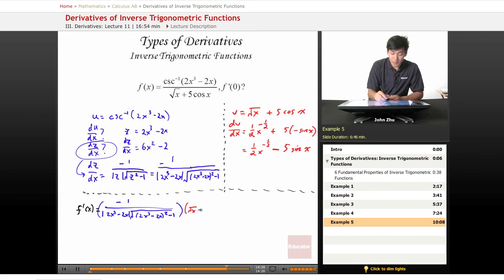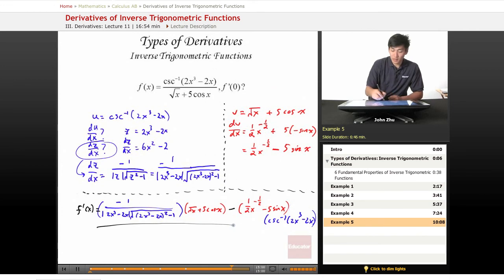which is just square root of x plus 5 cosine of x minus the derivative of the bottom term. 1 half x to the negative 1 half minus 5 sine of x times the top term, which is cosecant inverse of 2x. Put that right here, cosecant inverse of 2x cubed minus 2x. And of course, all this gets divided by the bottom term squared. So square root of x plus 5 cosine of x squared.